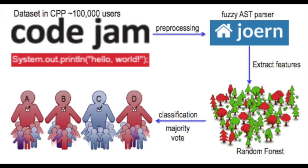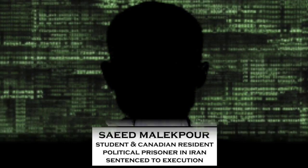It's possible to numerically represent a programmer's coding style by extracting features from the source code and abstract syntax trees, and de-anonymize them by machine learning. We can correctly re-identify 1600 people with 94% accuracy.